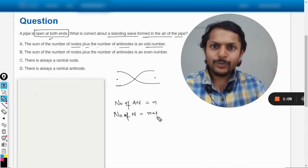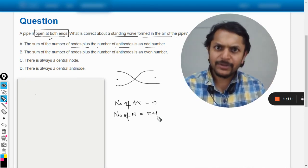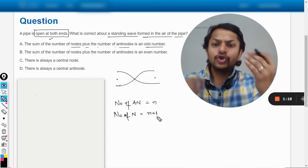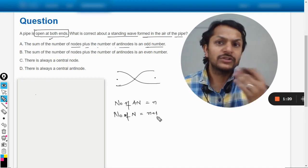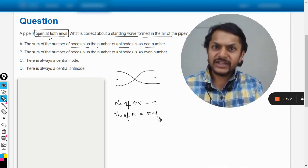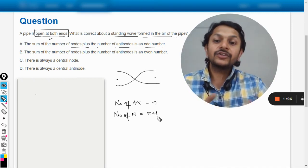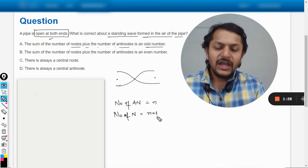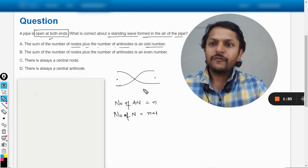If it is one end open and one end close, something else will happen. But I'll tell you, it's highly confusing. Even I can't remember this thing. So what is the best method? You just draw the diagram of the first harmonic or second or something in both of the cases, and then you can see if the antinodes are more or the nodes are more. Accordingly, you can create the formula.